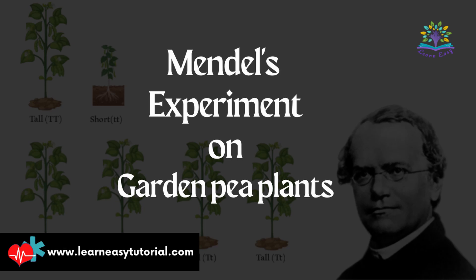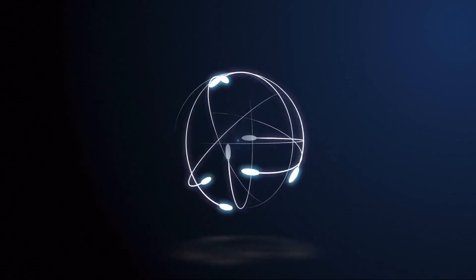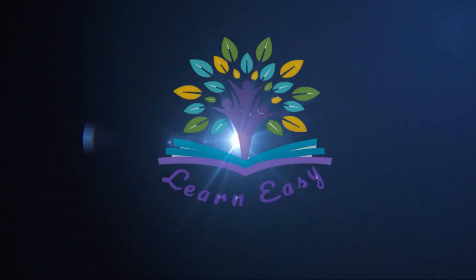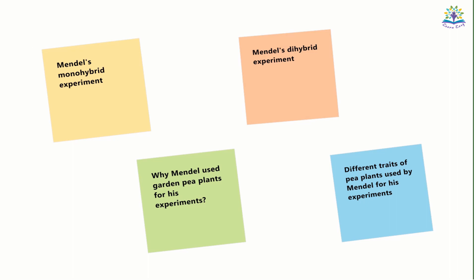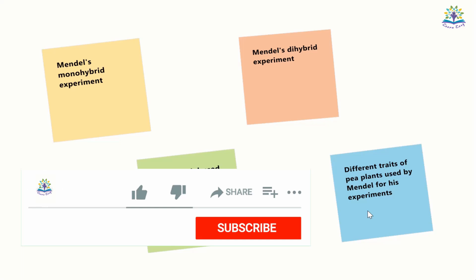Hello folks, welcome back. This is Learning Z Tutorial, your online learning companion. In this video, we will be discussing Mendel's experiment on garden pea plants. I'll be covering the following topics: Mendel's monohybrid and dihybrid experiment, why Mendel selected garden pea plants, and different traits of pea plants used by him. At the end of this video, I will also be giving you tips on key points to write if you get this question.